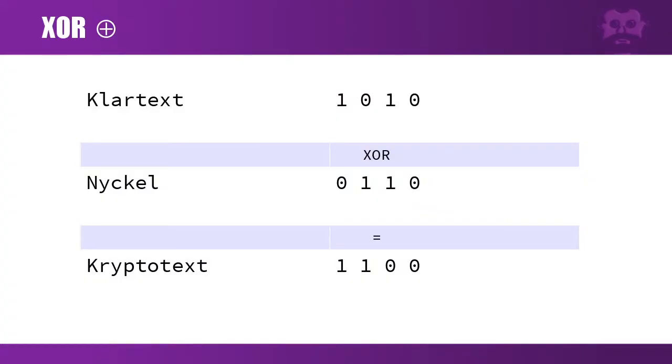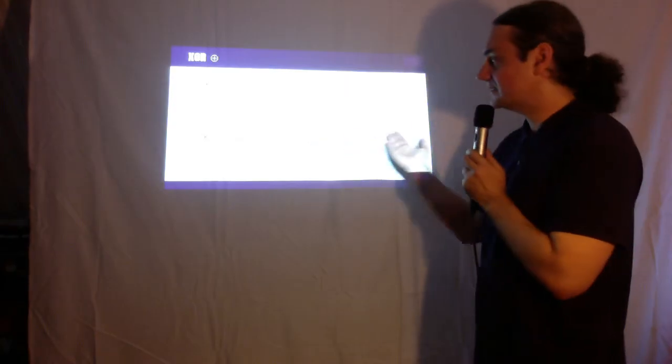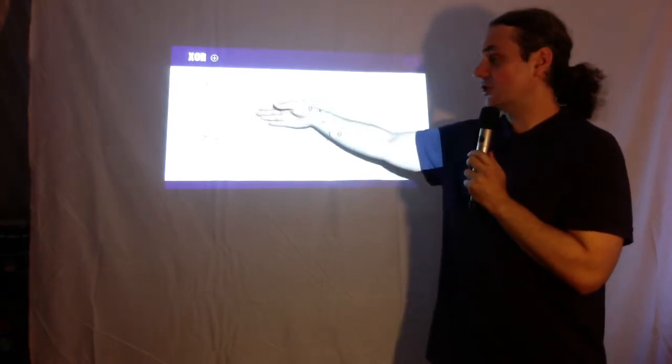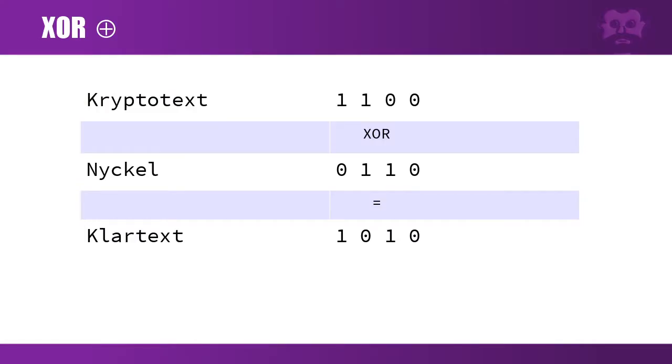Between the key and cryptotext, you get back to the text. So you XOR with the key, then XOR with the key again, and you get back to the text from the beginning. This is a pretty nice property for XOR.